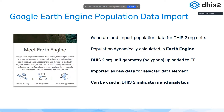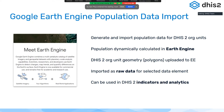This is quite powerful because it allows for use in indicators, in analytics, in dashboards, maps, and really everything else you can do with DHIS2. So once again, if you don't have reliable population data, or you would like to have a second set of population data, you can now automatically calculate this in Earth Engine.